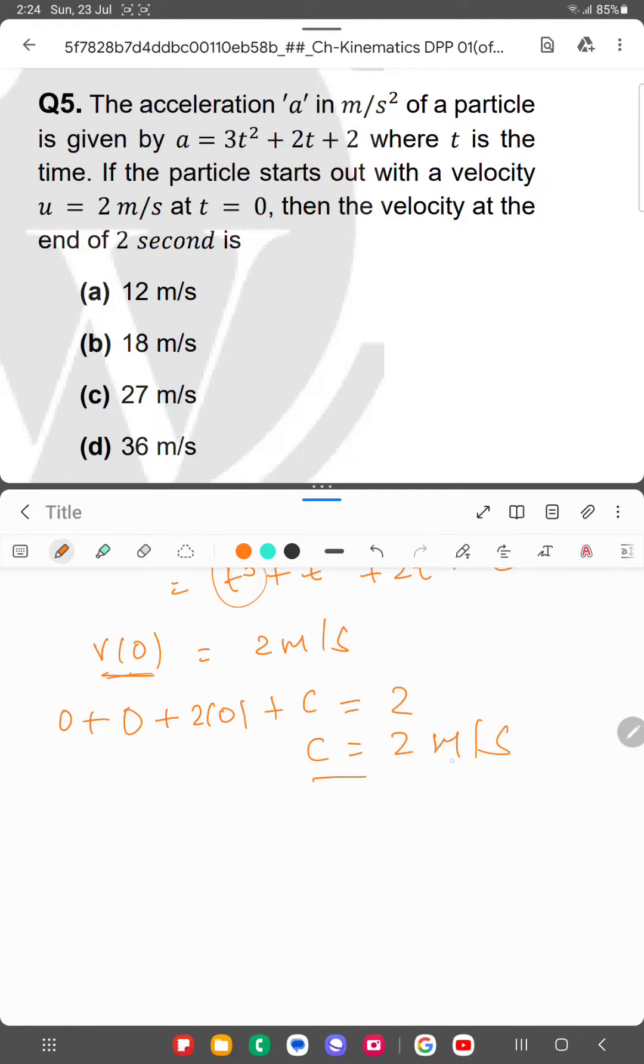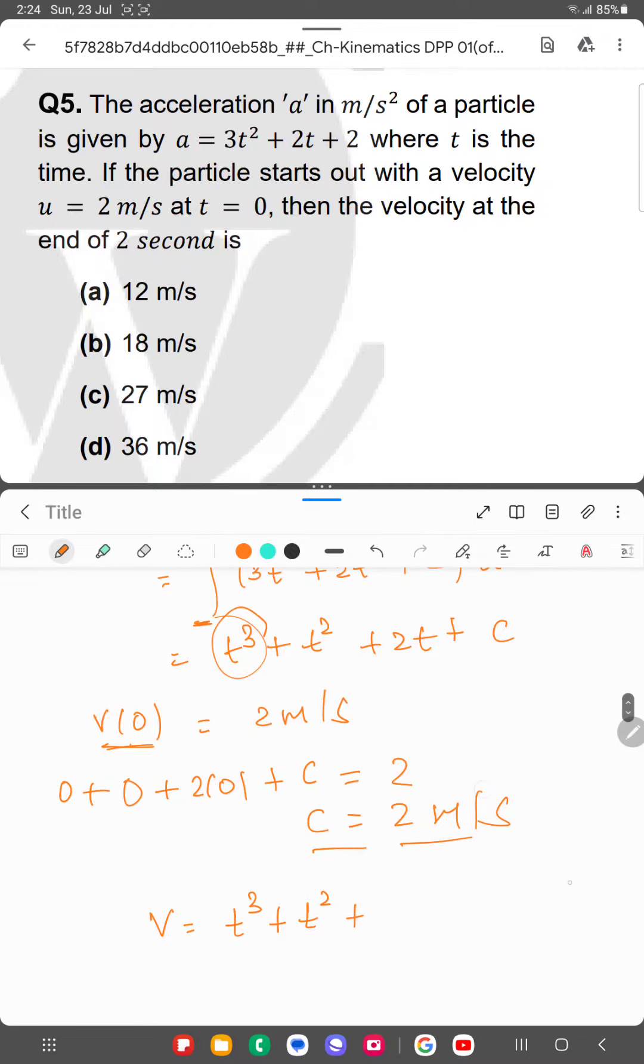Now the value of c is 2 m/s, so the velocity equation is v = t³ + t² + 2t + 2.